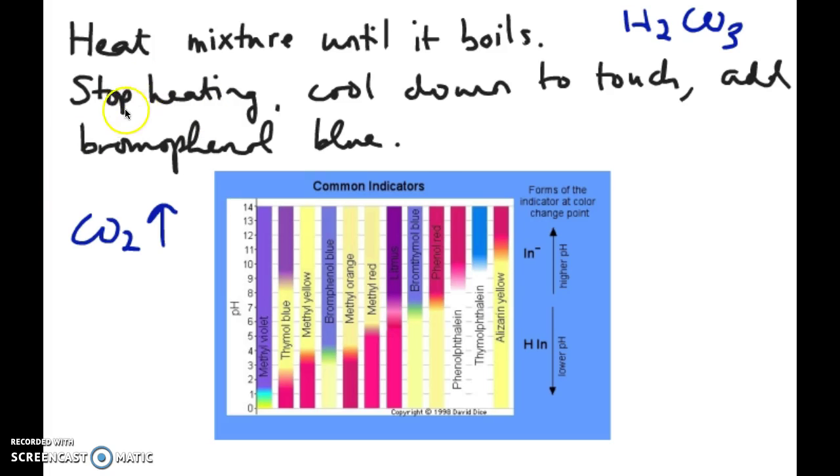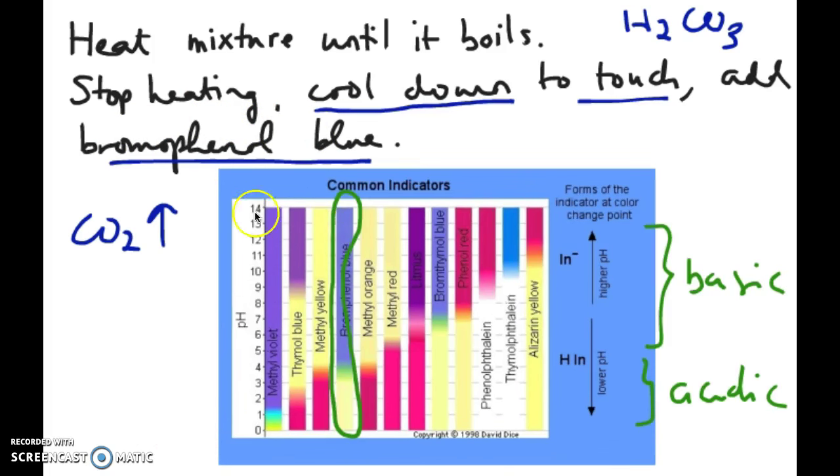So once you heat and it boils, then you want to stop the heating and you want to let it cool down to touch. That means that if you can touch the bottom of the flask with your hands, that means it's ready to go to the next step. Now what is the next step? The next step is to add your indicator, which is going to be bromophenol blue, to the antacid HCl mixture.